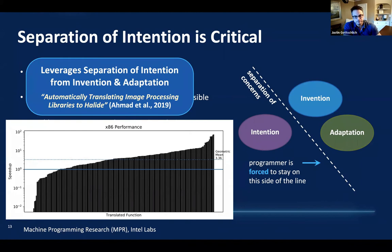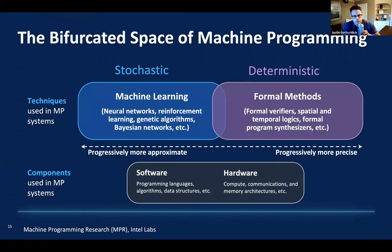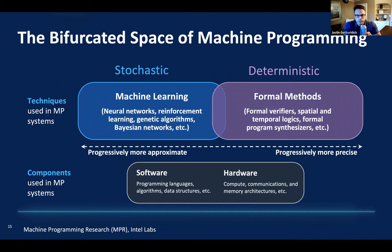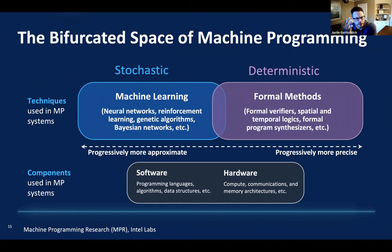Now we can move on to the bifurcated space of MP. This is the part that Armando Sola-Lazama and I are sort of debating — he has a slightly different view. The three pillars of machine programming we think we have nailed down. But this second piece is very much work in progress. We currently have these two sides, and I don't necessarily think this is correct — but this is one possible way of thinking about machine programming.